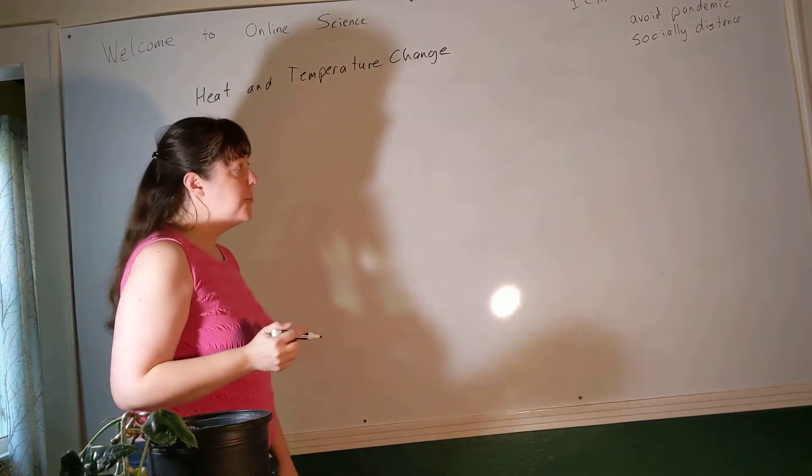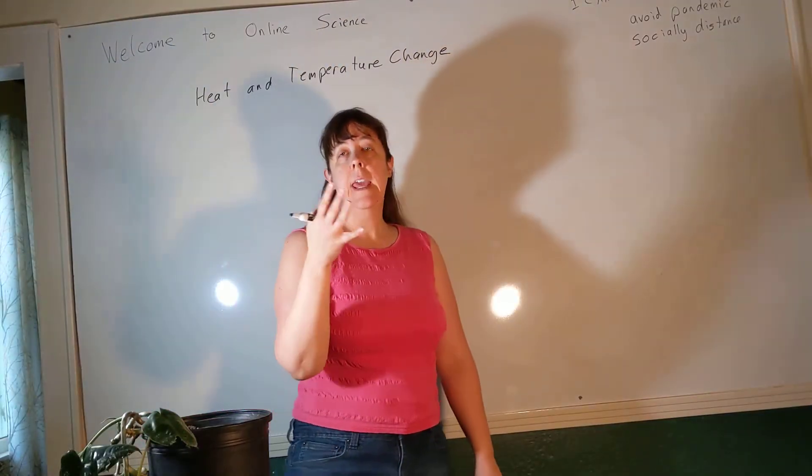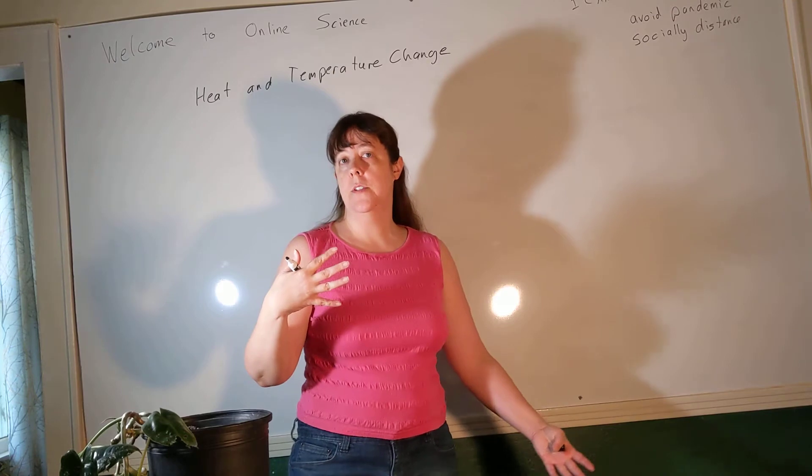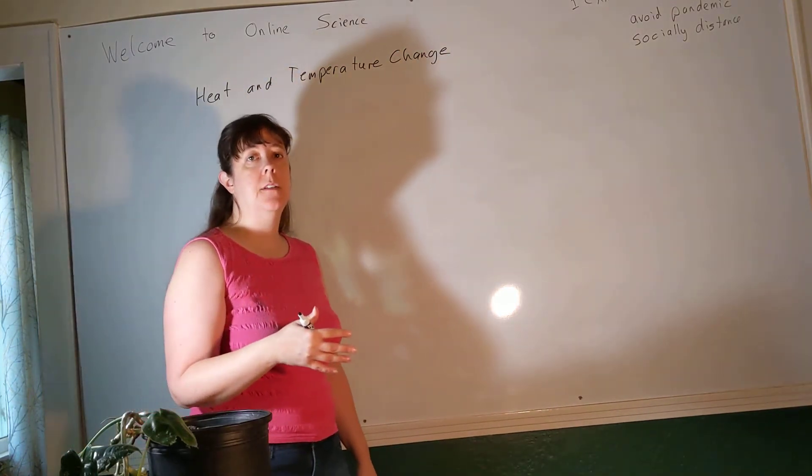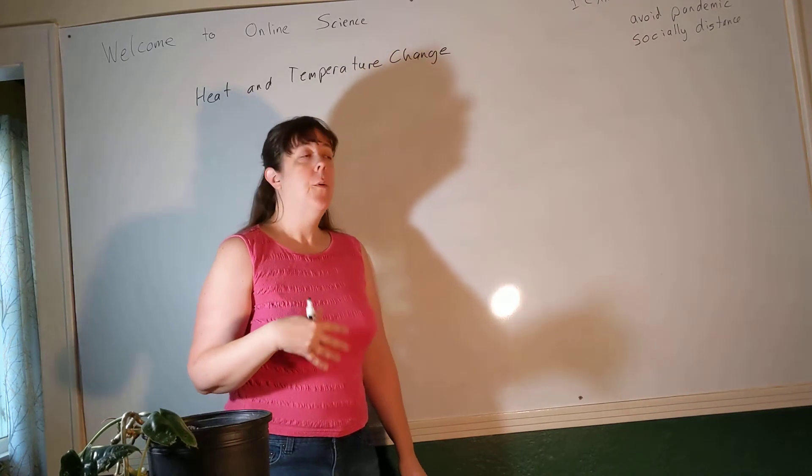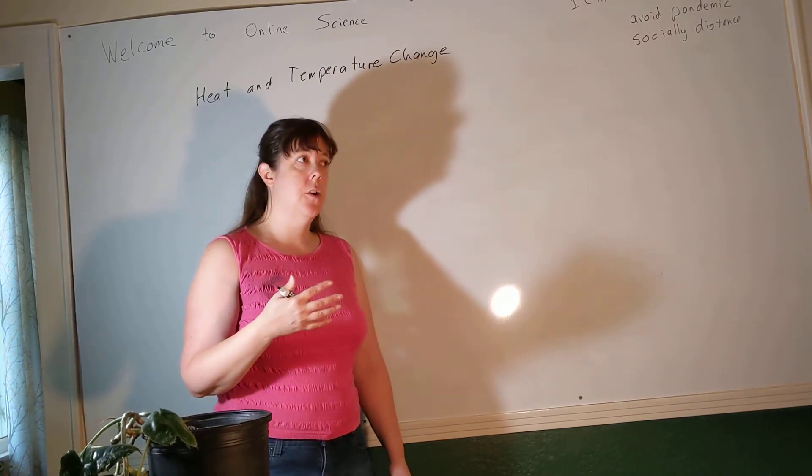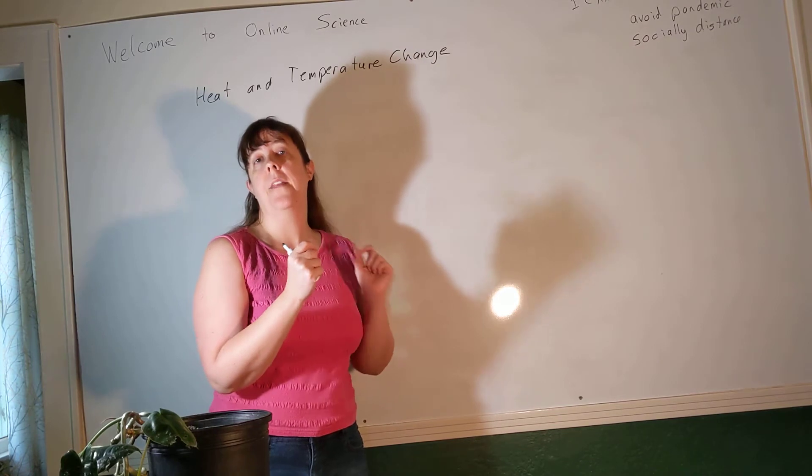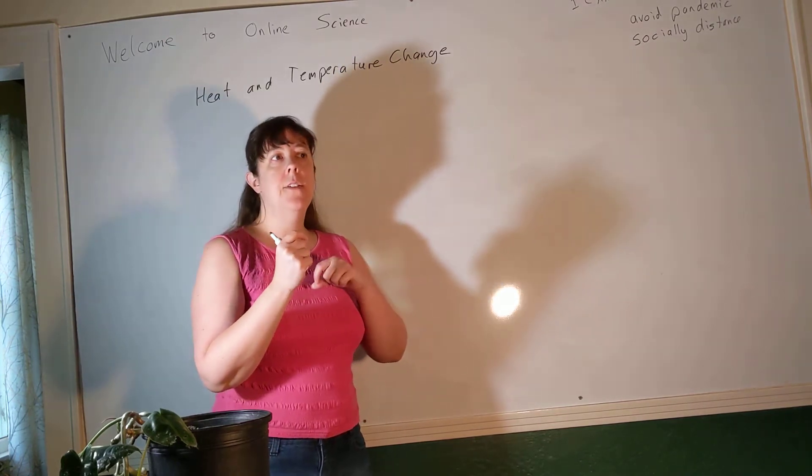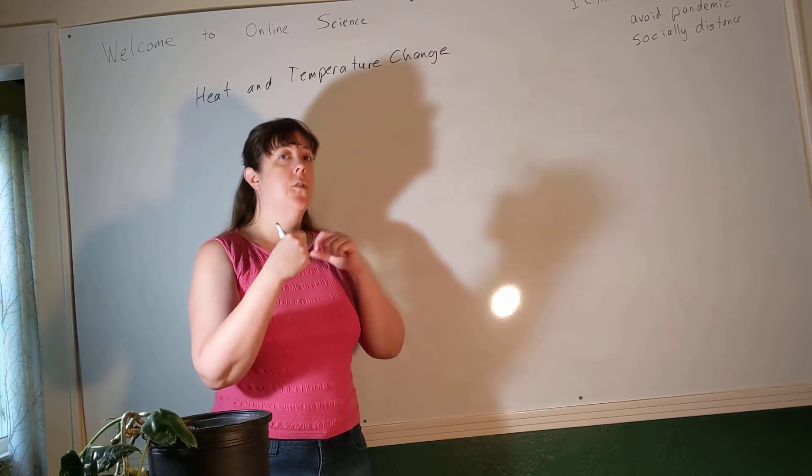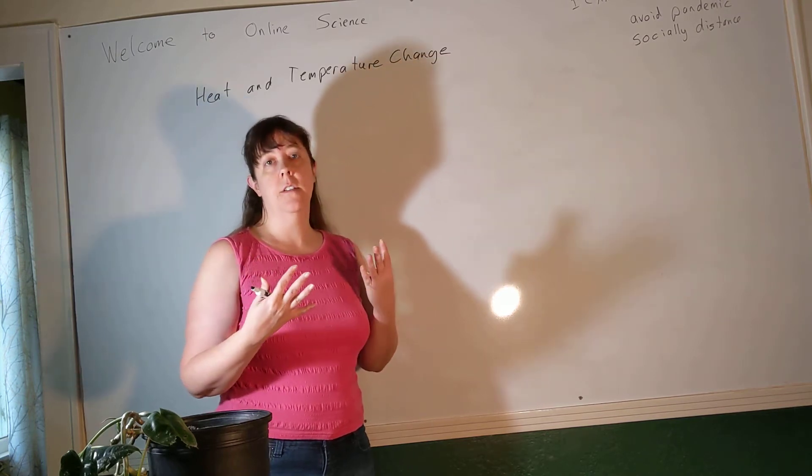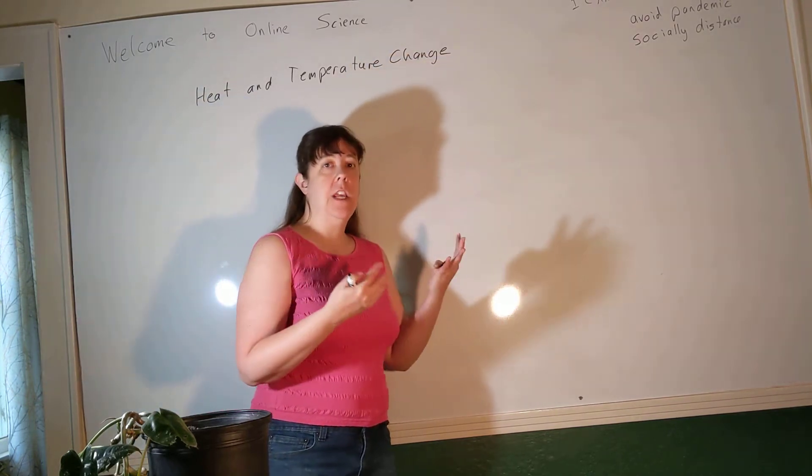So I think it's pretty intuitive that if heat goes into an object or into a substance, then its temperature increases, and if heat leaves that object or substance, its temperature decreases. We know that we can think about heat and temperature, or think about temperature as being the motion of the particles. We talked about that with the gases. So obviously to make those particles move faster requires energy, and in order for those particles to slow down, energy must have gone somewhere. But how much heat?